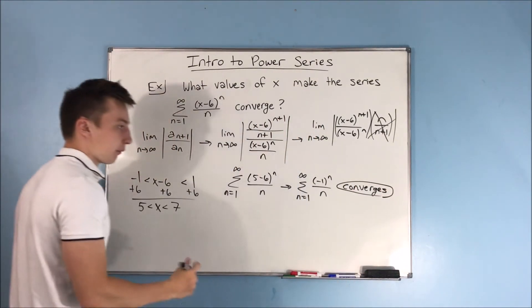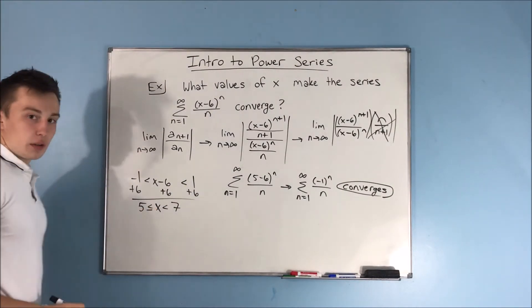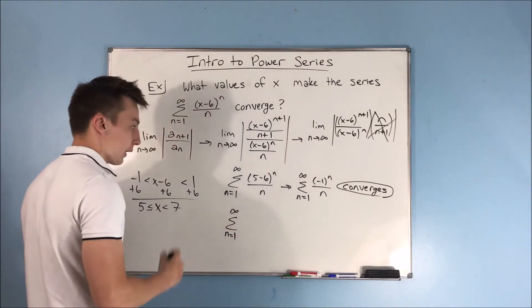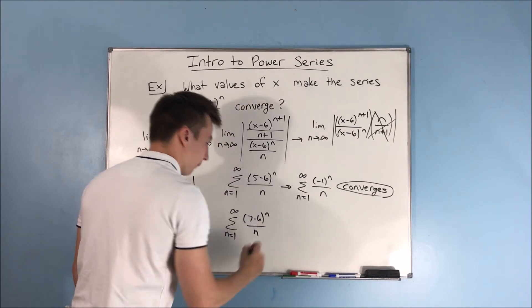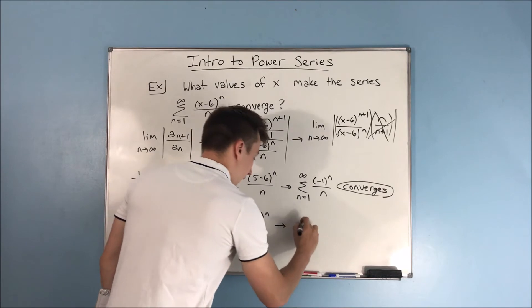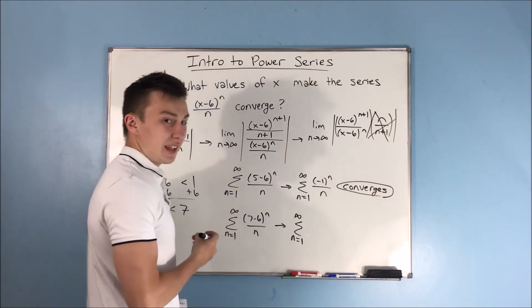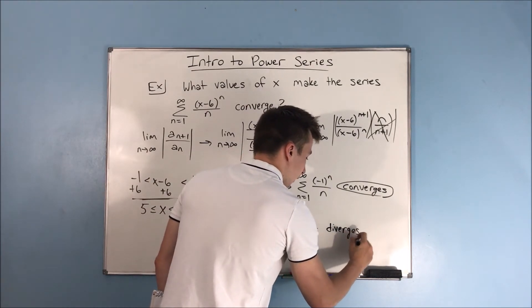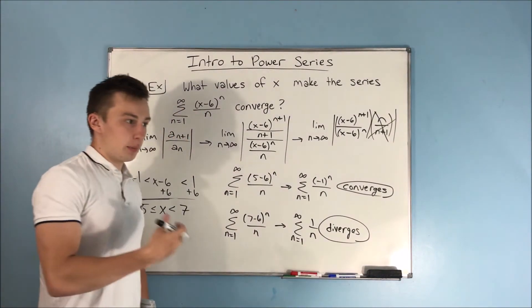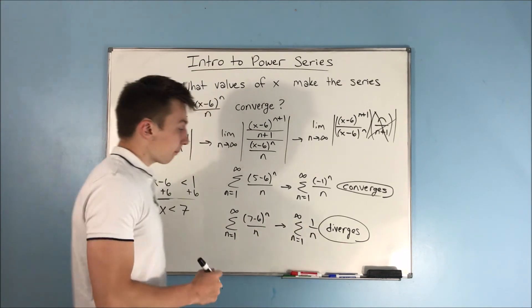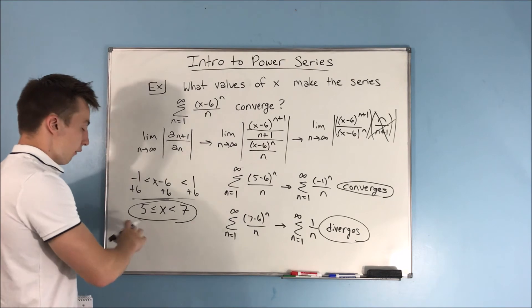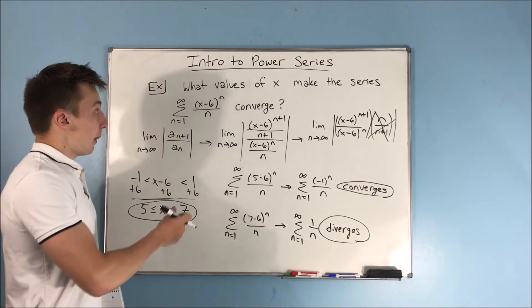Since x equals 5 converges, we include that endpoint. Now plugging in x equals 7: we get (7 minus 6) to the n over n, which gives 1 to the n over n, and that's just 1 over n — the harmonic series, which diverges. It's a p-series with p equal to 1, and the p-series diverges when p is less than or equal to 1. So we do not include the endpoint 7. The values of x that make this series converge are 5 less than or equal to x less than 7, including 5 but not 7.